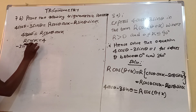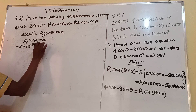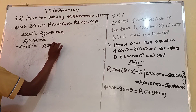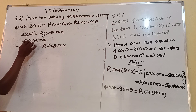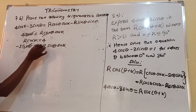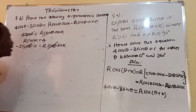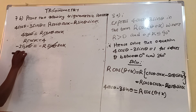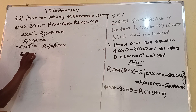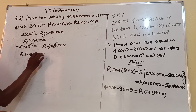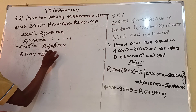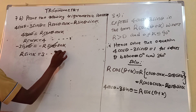Equating the cos theta terms: r cos alpha equals 4. Equating the sin theta terms: r sin alpha equals 3. Let us call r cos alpha = 4 equation 1, and r sin alpha = 3 equation 2.